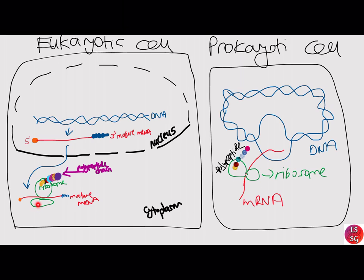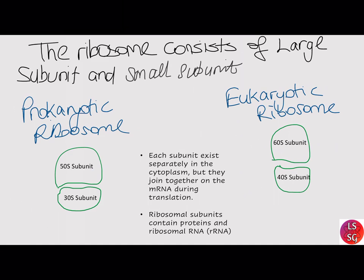Ribosomes then read the genetic code in the messenger RNA sequence to produce a polypeptide chain made up of amino acids. So let's start with two questions: what is a ribosome and what is the genetic code?